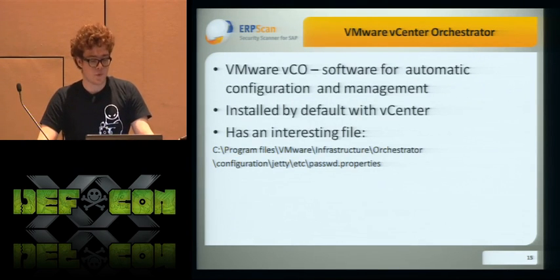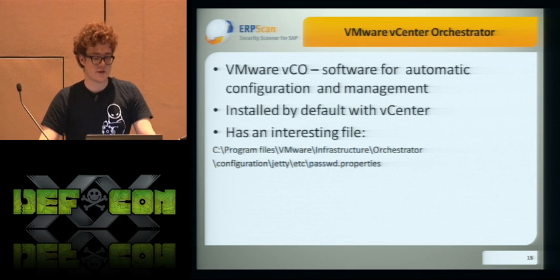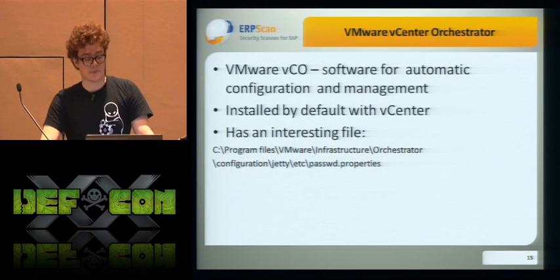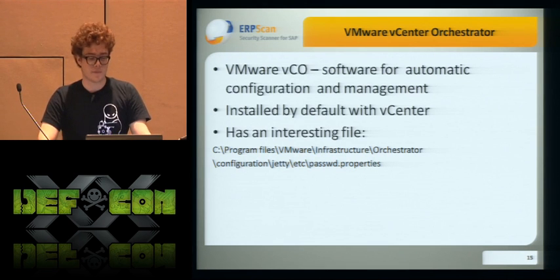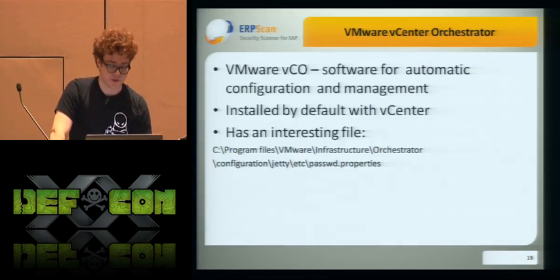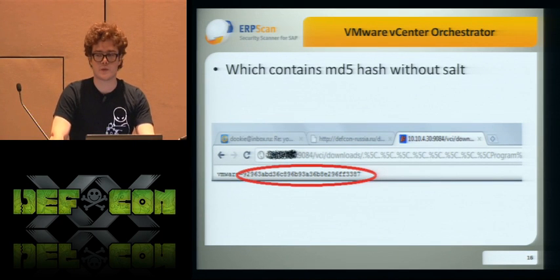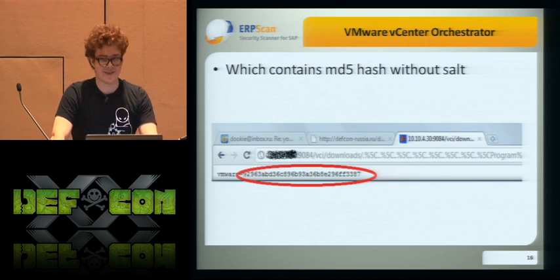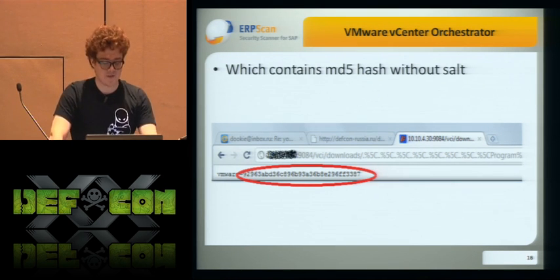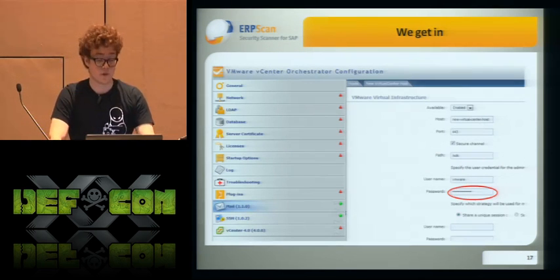We did a little analysis and found vCenter Orchestrator — software for automatic configuration and management of vCenter, installed by default with vCenter. It has interesting files like gate, etc., and password.properties. Each contains an MD5 hash without a salt. Nowadays, as I know, that's not very secure. So of course we brute-forced it and gained control.